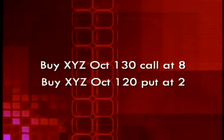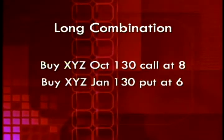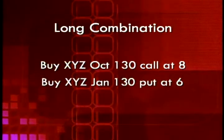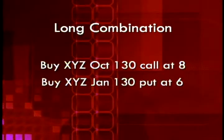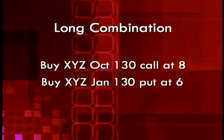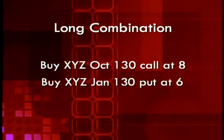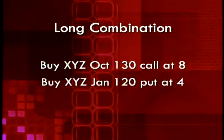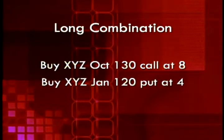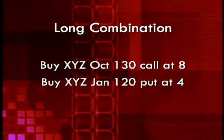Here's another example of a different combination. Again, we have a long call and a long put on XYZ stock, but in this case the expiration dates on the two options are different — we still have a long combination. We can also have a combination where both the strike prices and the expiration dates are different.